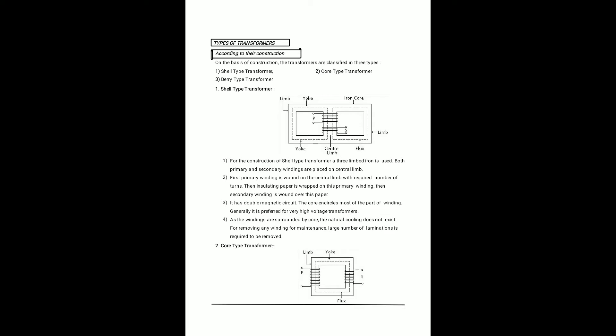According to construction, types of transformers include the shell type, core type, and berry type. In the shell type transformer, three limbs of iron are used. It has two windows, with the primary and secondary windings placed on the central limb. The flux flow can be seen in the diagram — this is a sandwich type winding.